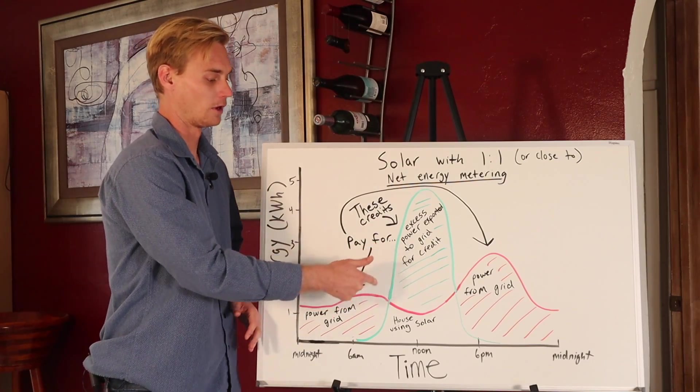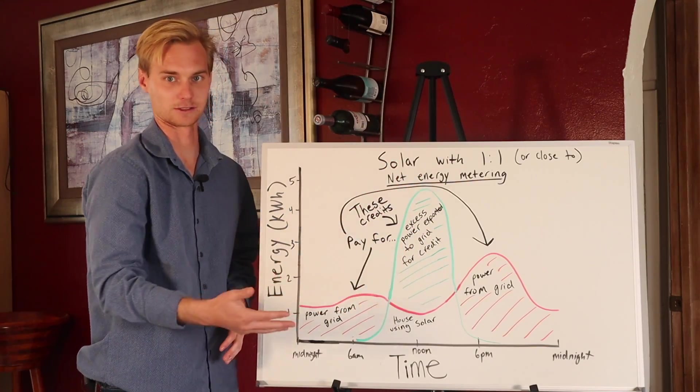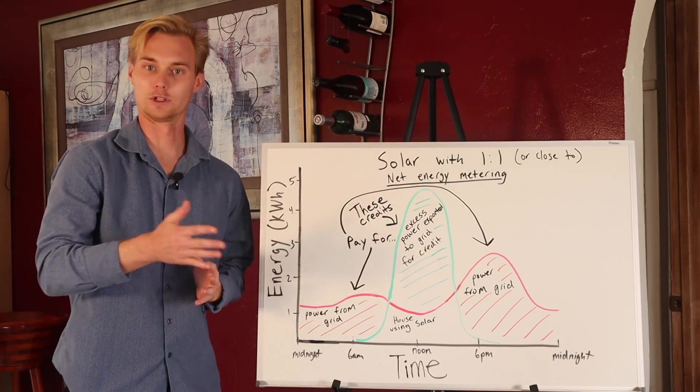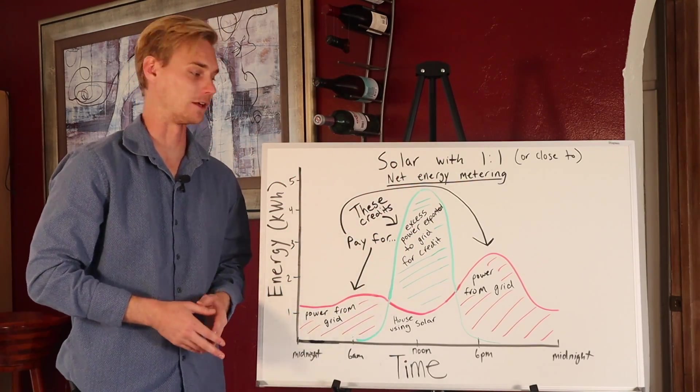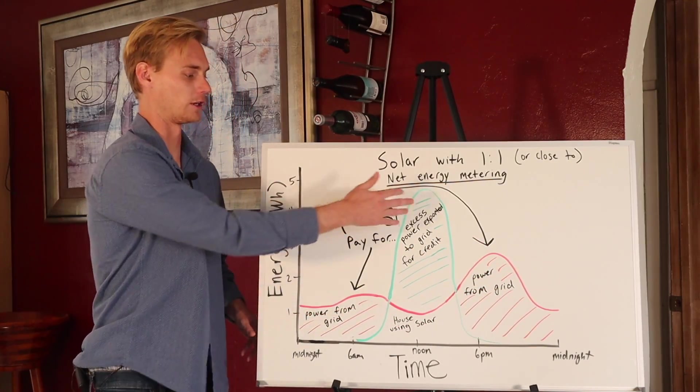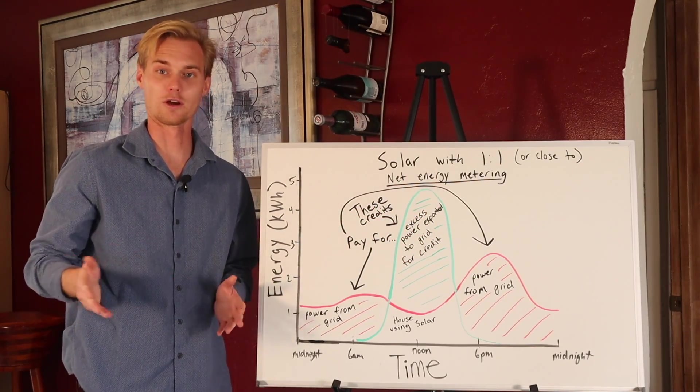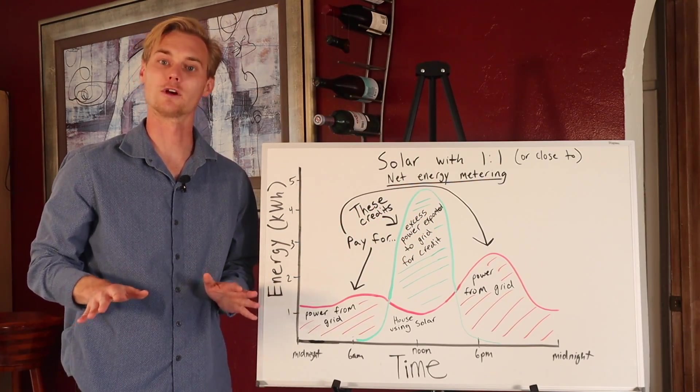And so net metering solves this problem. Basically any time when the green line is above the red line, that power is excess, and it goes back to the grid. The utility company buys it from you, and then you do pull power from the grid in the evening time and in the middle of the night, but the credits just pay for it, it zeroes each other out, and you're good to go. You don't need a battery, solar itself solves your problem.